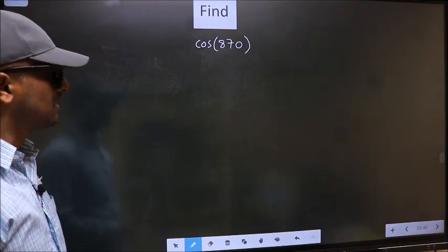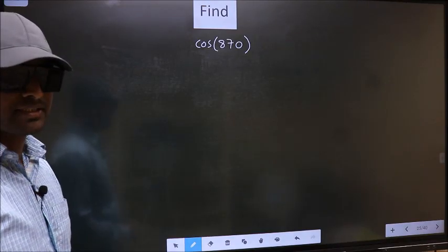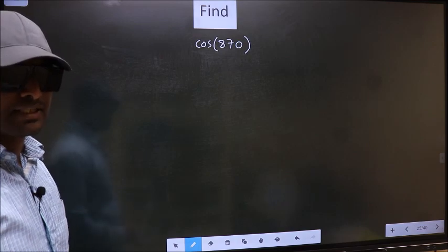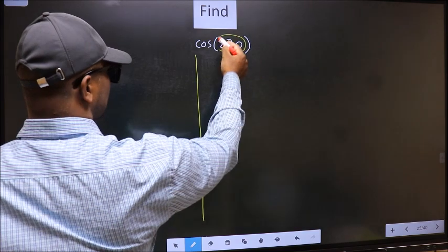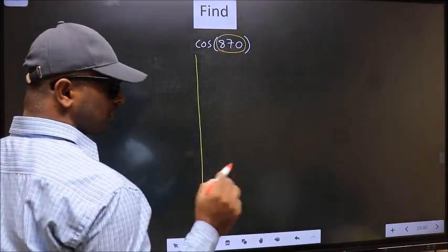Find cos 870. To find this, we should follow this method. See, here we have 870. Now you should check